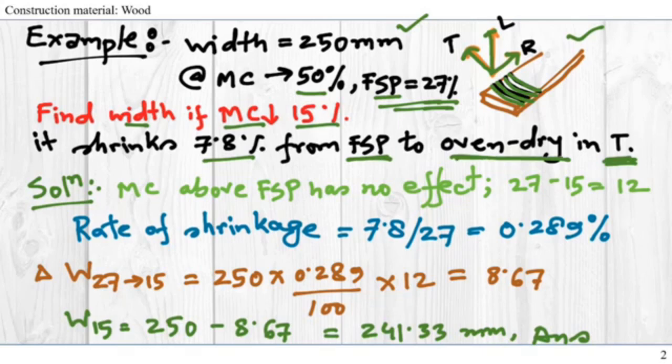So how do we approach this problem? For the solution we have to consider that the moisture content above the FSP has no effect. The only thing we have to worry about is the moisture drop from 27% to 15%. So from 50% to 27% drop has no effect.